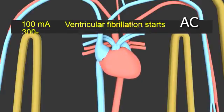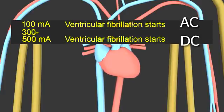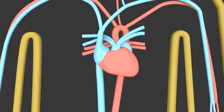At 100 milliamps AC, or 300 to 500 milliamps DC, if the current runs through the heart, then that is interfered with. This causes what's called ventricular fibrillation.